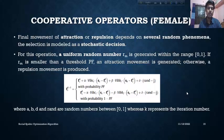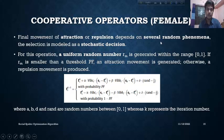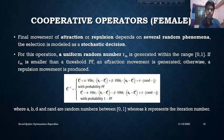Now we discuss cooperative operators for the female. The final movement and the attraction or repulsion depends on several random phenomena modeled as a stochastic decision. A uniform random number RM is generated in the range 0 to 1. If RM is smaller than the threshold, an attraction movement is generated; otherwise, a repulsion movement is produced.